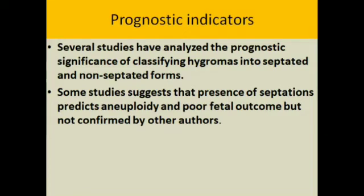What are the prognostic indicators? Many studies have analyzed the prognostic significance of classifying hygromas into two types: septated and non-septated. Some studies suggest that the presence of septation predicts aneuploidy and poor fetal outcome, but this has not been confirmed by many other studies.